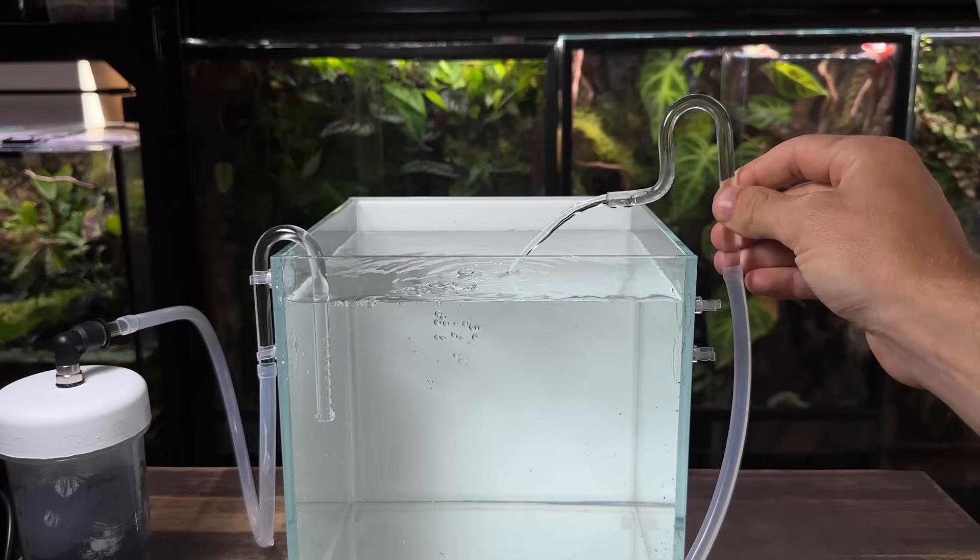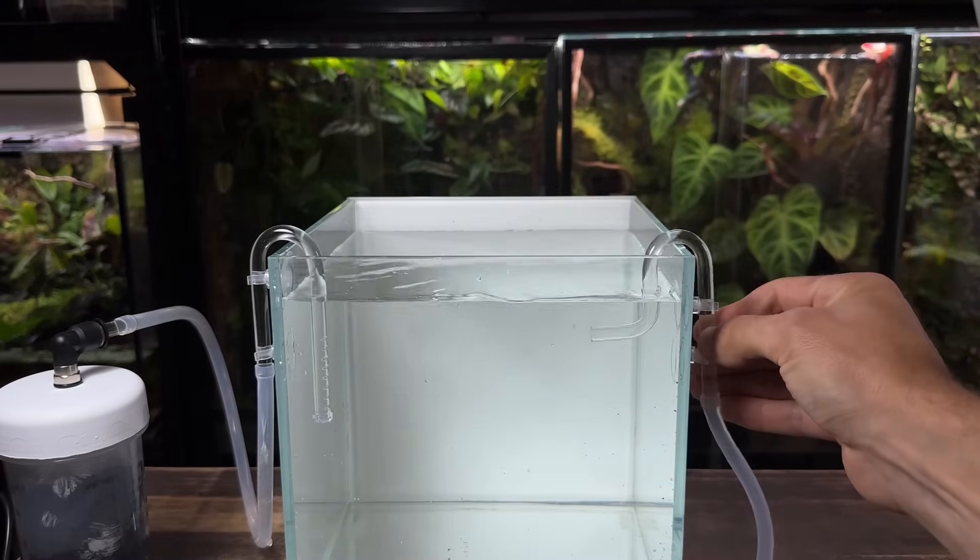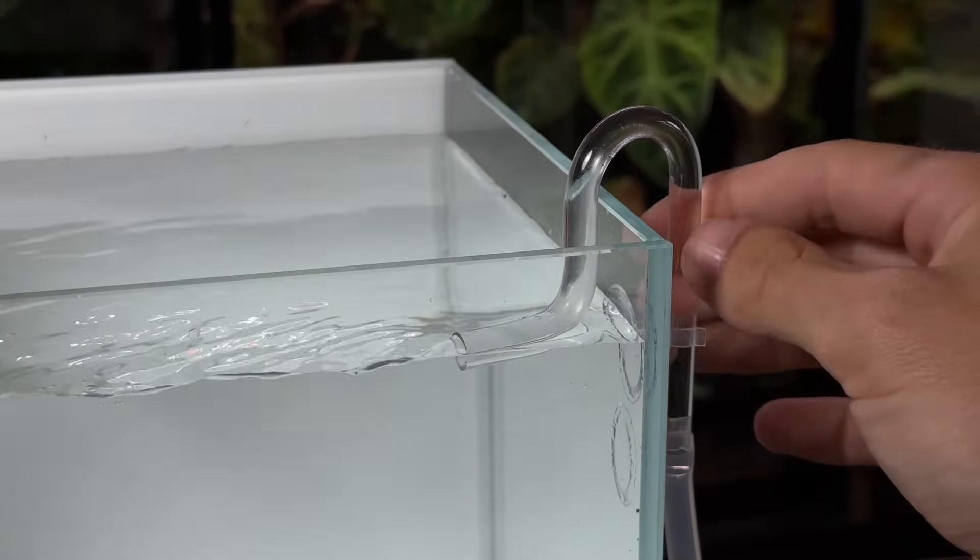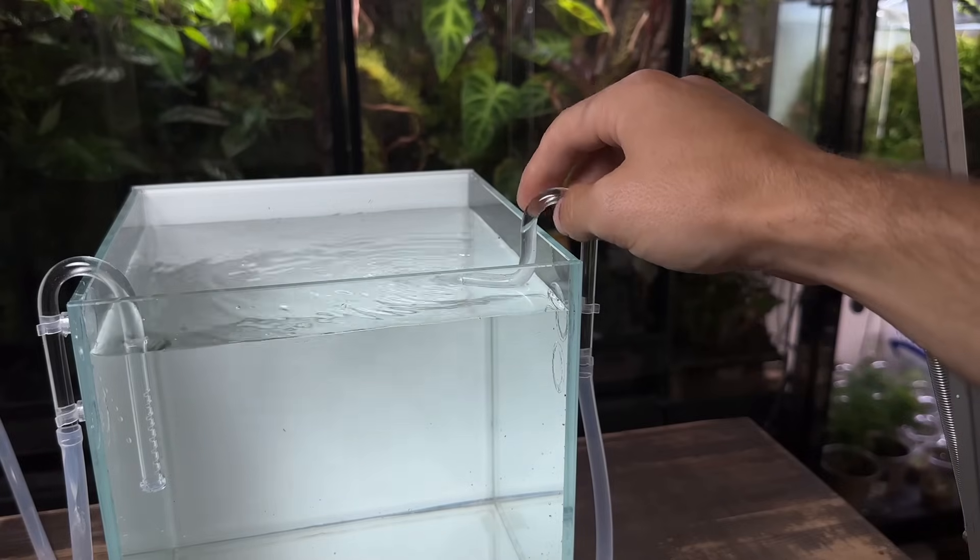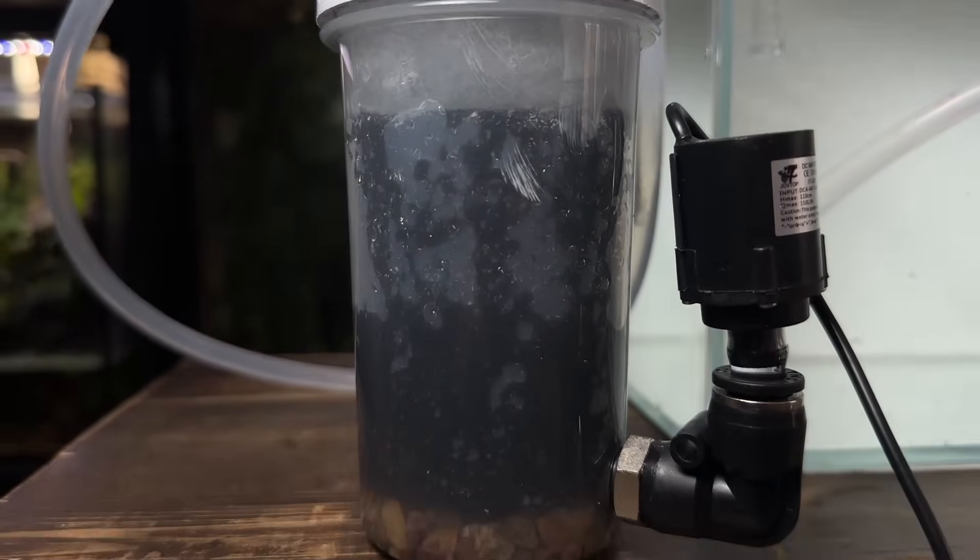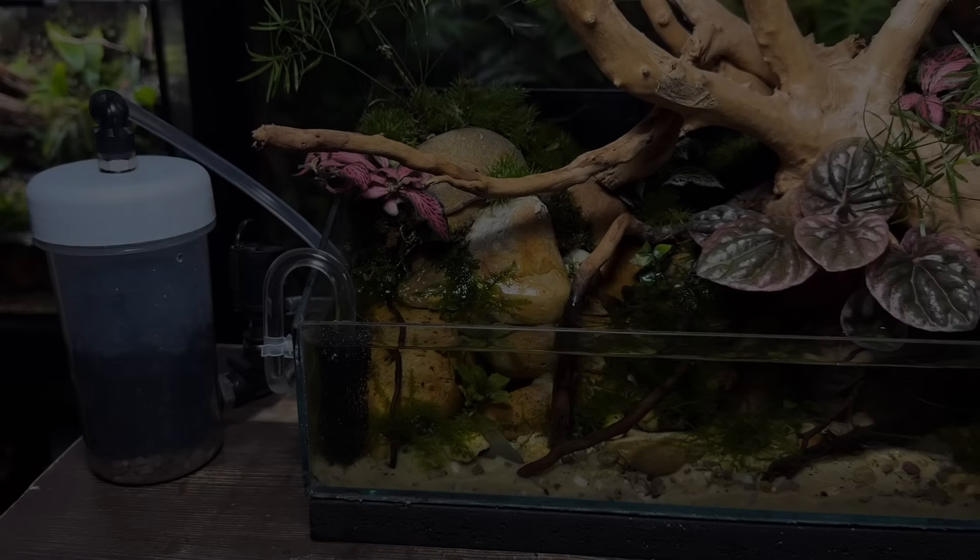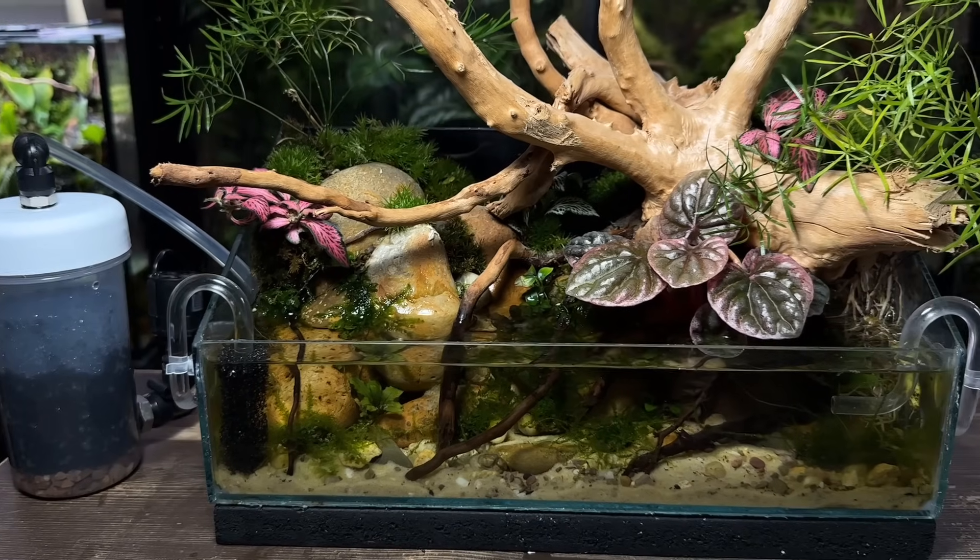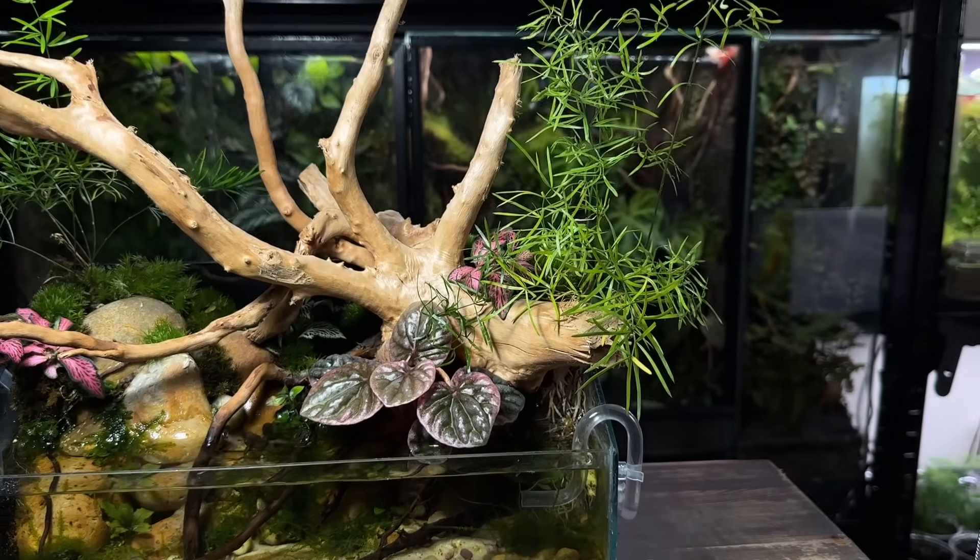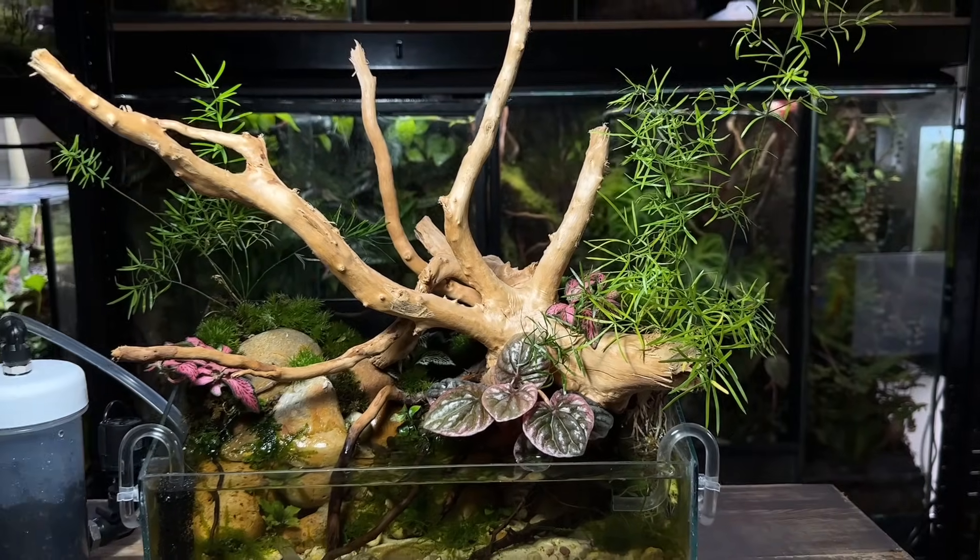It really does have some good flow for its small size and I absolutely love the adjustability of these small lily pipes. I can easily twist it to change the direction of flow or even lift it up to create more agitation on the surface. I hope you found this video useful and have a go at making one of these micro canister filters as they really do work well. Don't forget to check out the mini lily pipes if you want some and as always thank you for watching.